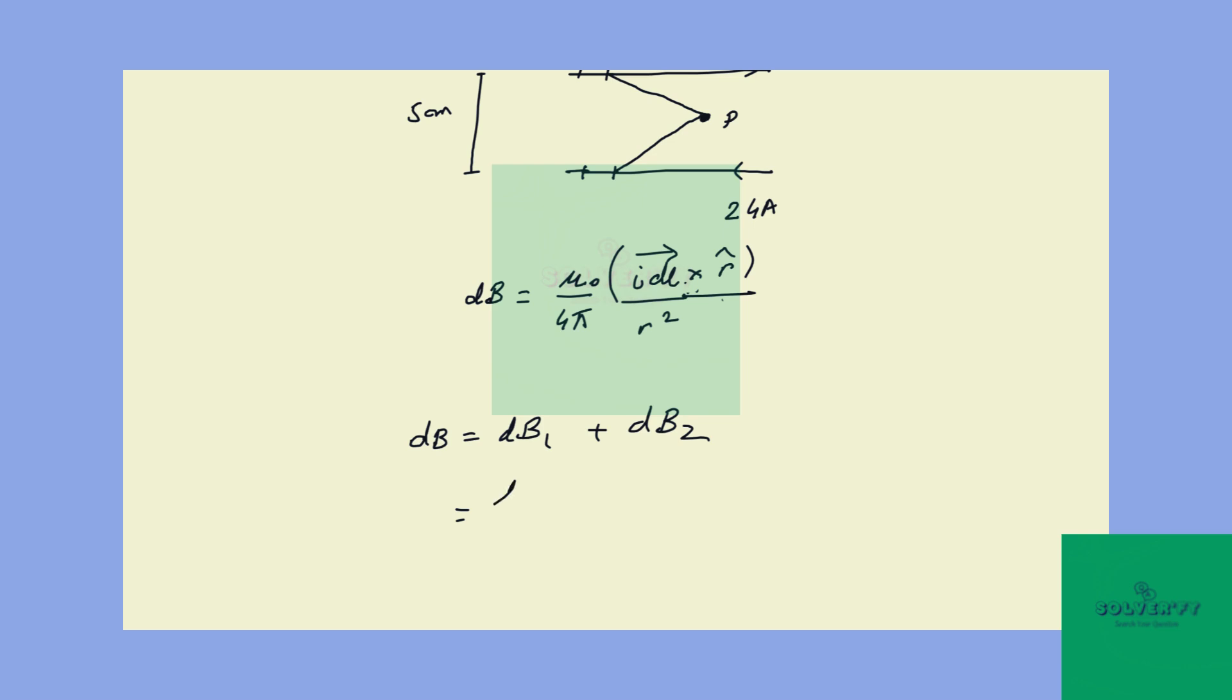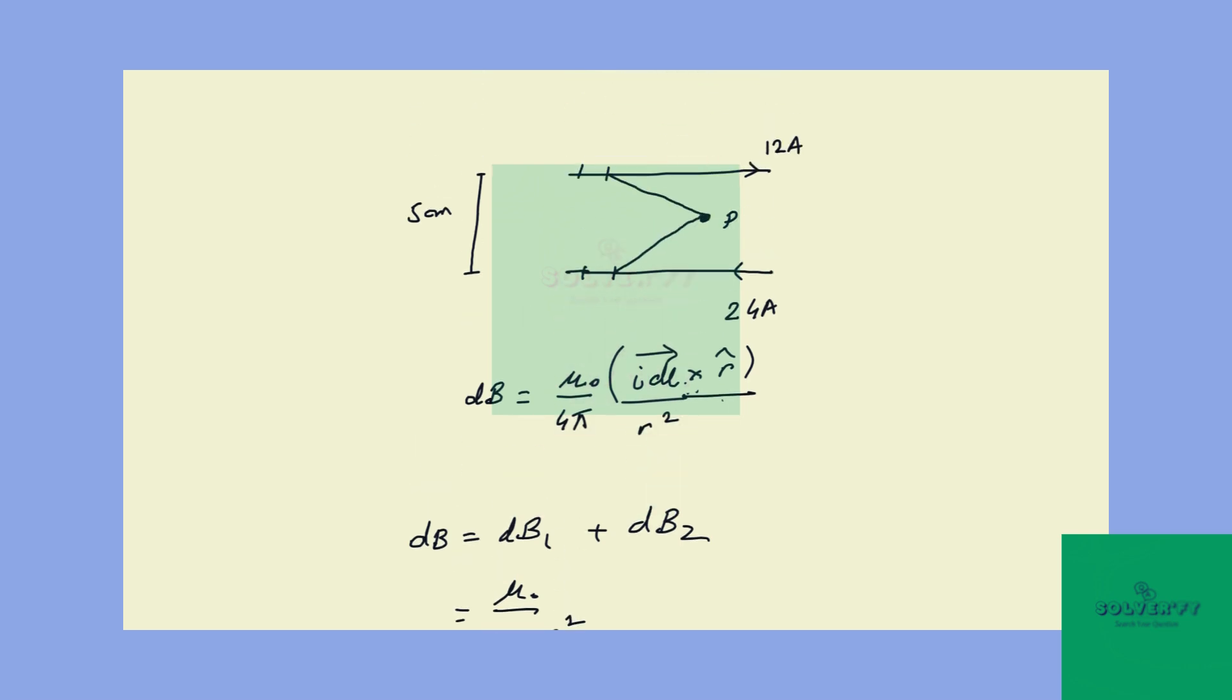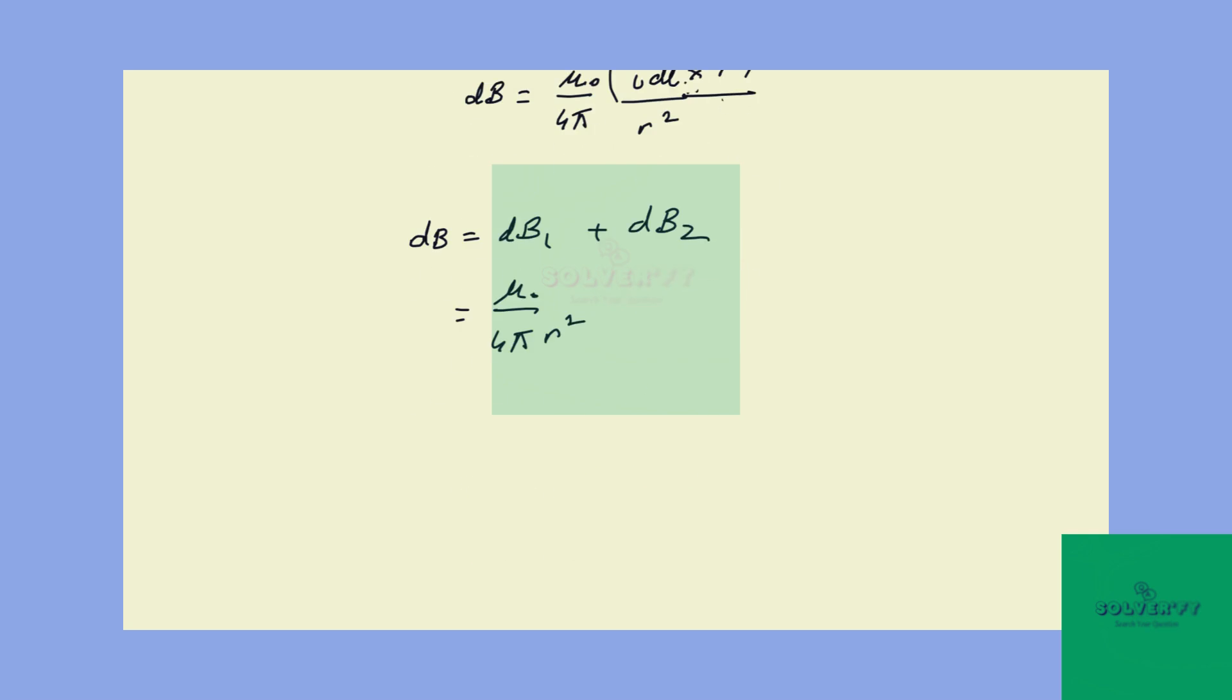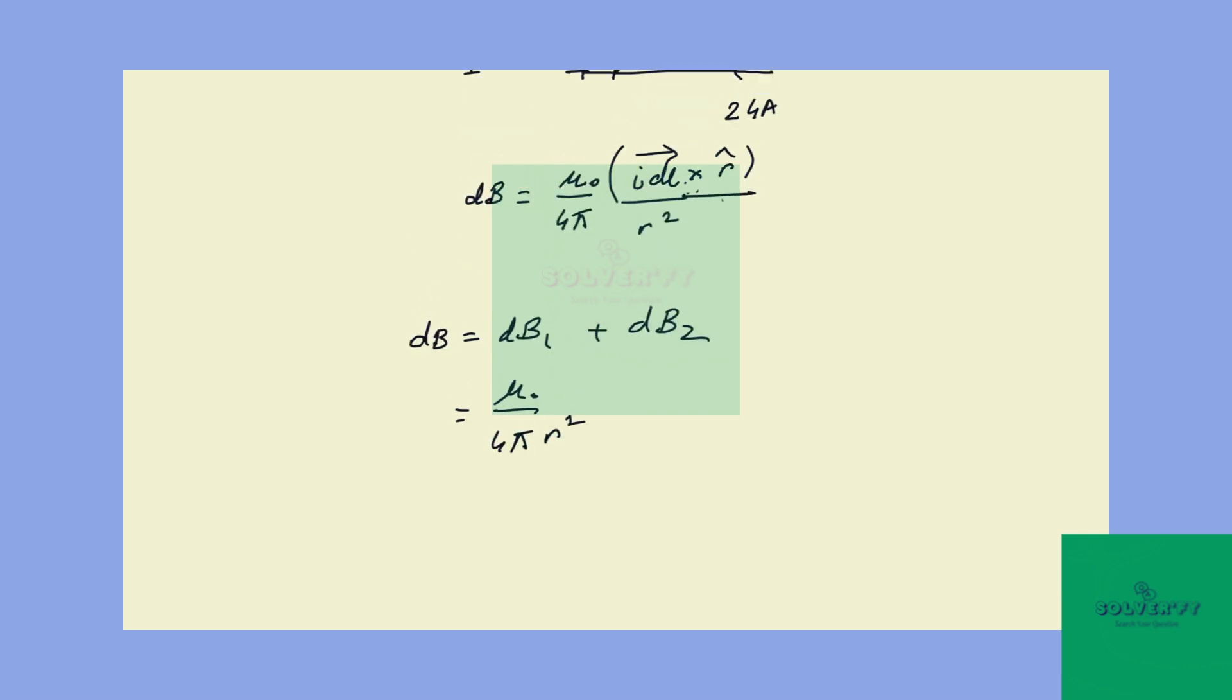I can take mu naught by 4π common, and r squared can also be taken common because they are at the same distance of eight centimeters. So you can take this r common, and here we will have i times dL.